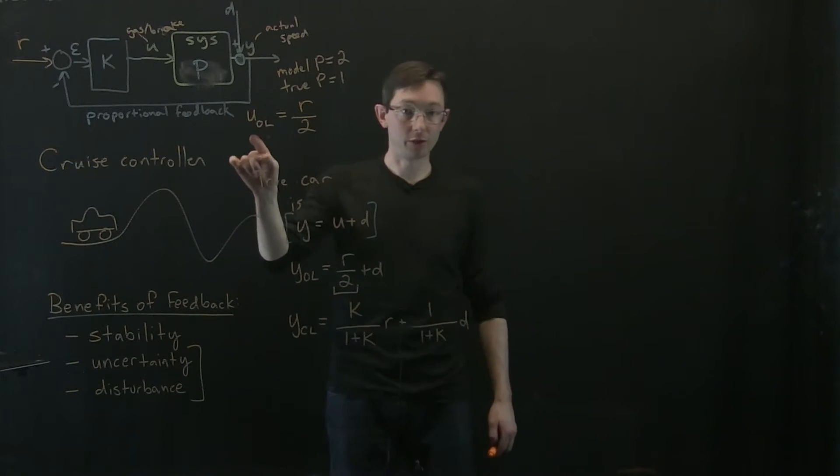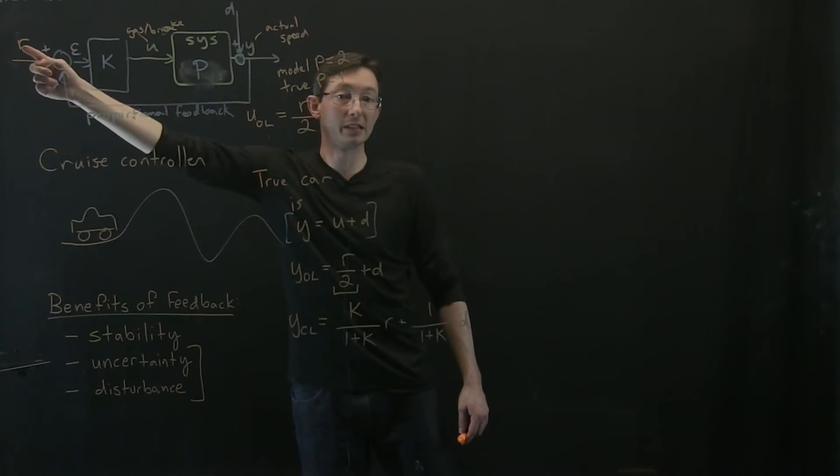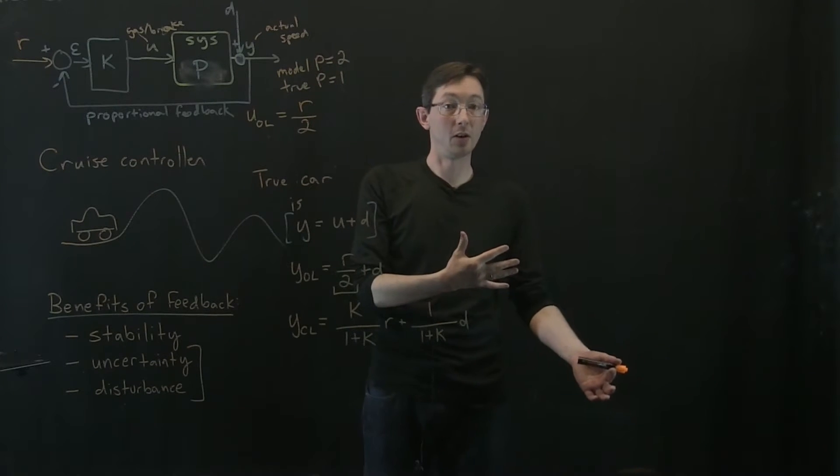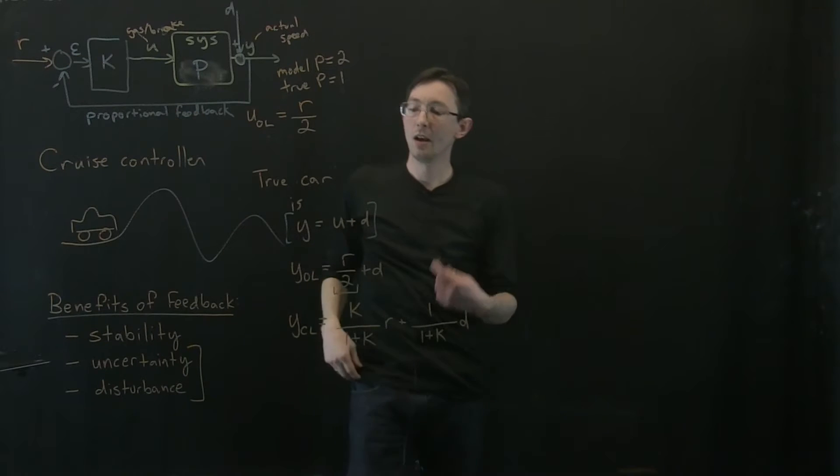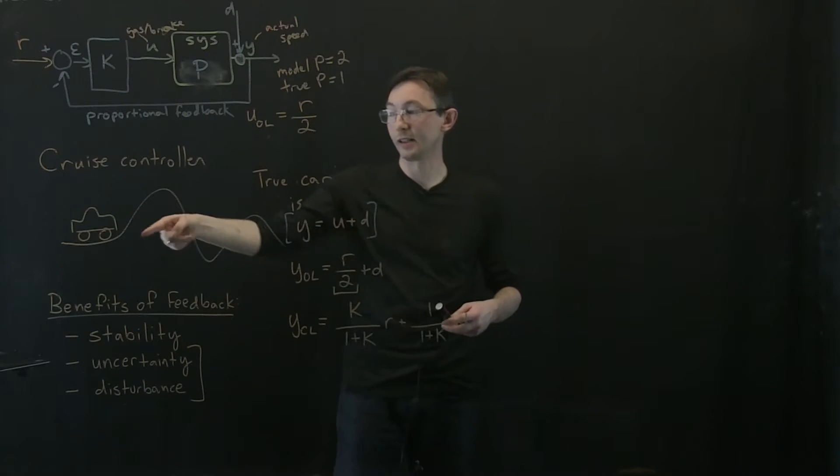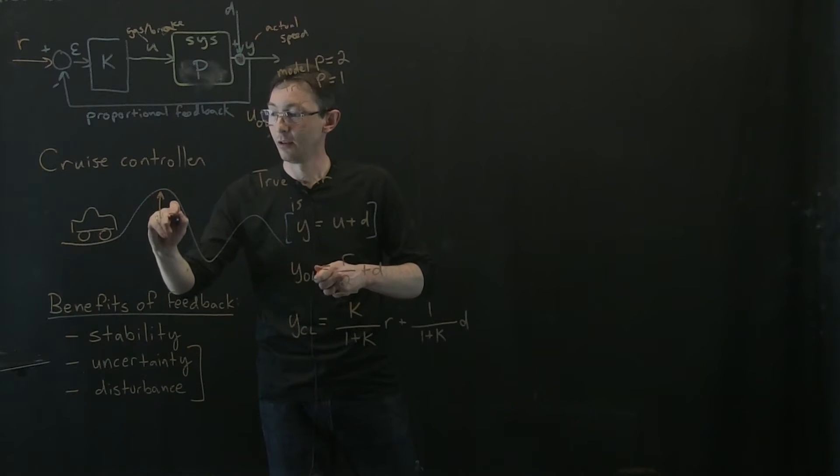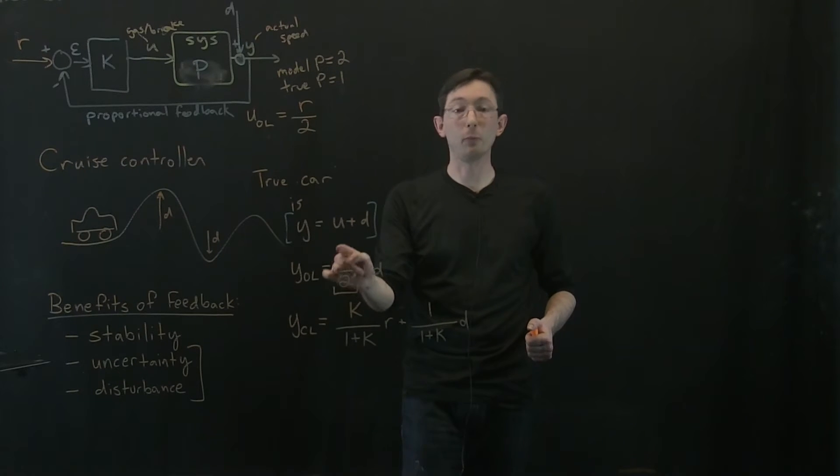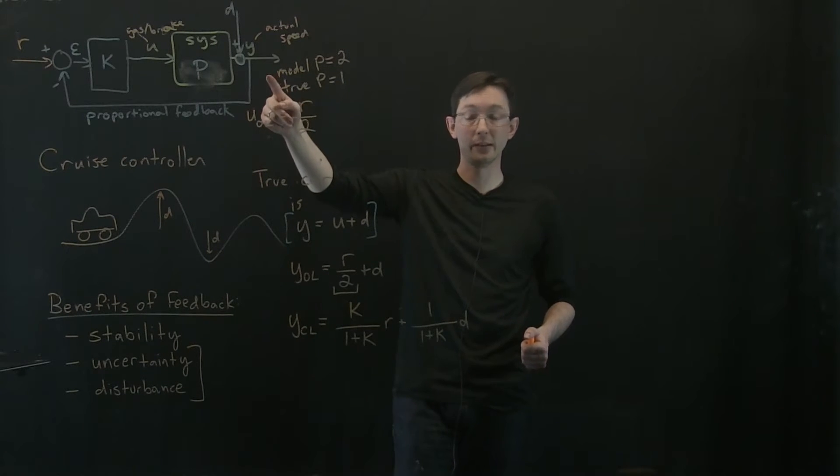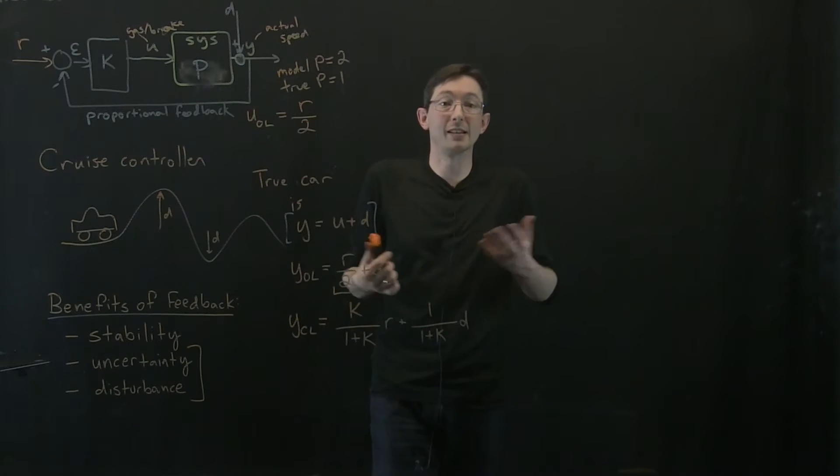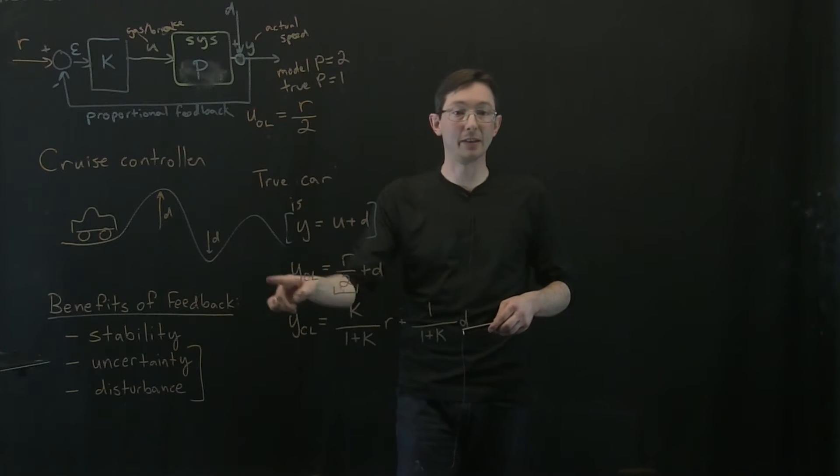So the open loop controller would say, take your reference desired reference speed r and just divide it by 2. And that's how you pass through the model to get y equals r, to get your actual speed to equal the reference. But in the case where my model was bad, and maybe I also have disturbances like these rolling hills, the magnitude of these rolling hills is the disturbance. Open loop is going to be really way far off. It's not going to track the reference speed well at all. It's going to be off by 50% because the model was off by 50%. And the disturbance is going to pass right through the open loop controller because it's not measuring anything. So we're going to show in MATLAB that this is just really bad.